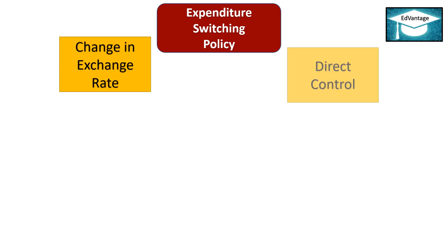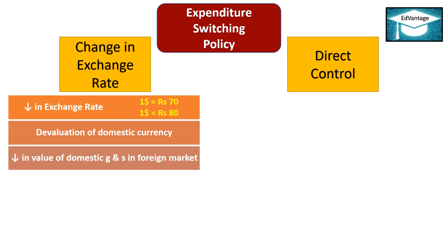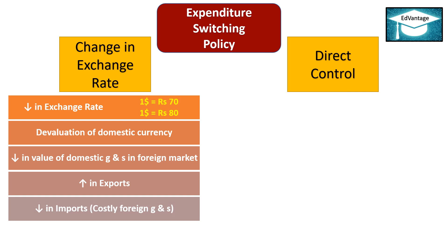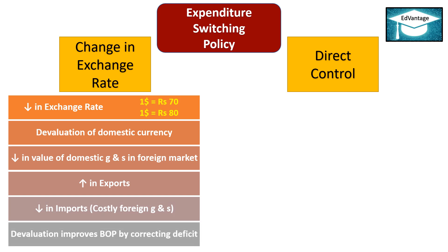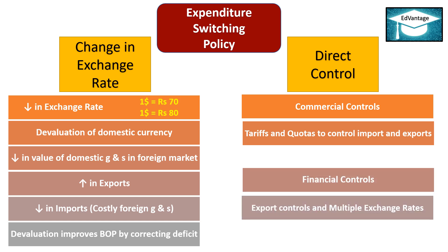Expenditure Switching Policy can be brought about by change in exchange rate or by direct control. For example, if the exchange rate is decreased — that is, $1 which was Rs 70 earlier is now Rs 80 — the Indian currency has devalued. In such a case, the value of Indian domestic goods and services in the foreign market is reduced, leading to increase in exports. Further, foreign goods become expensive, therefore imports are reduced. Thus devaluation improves the BOP by correcting deficit. Direct controls are of two types: Commercial controls (tariffs and quotas) and Financial controls (export controls and multiple exchange rates).